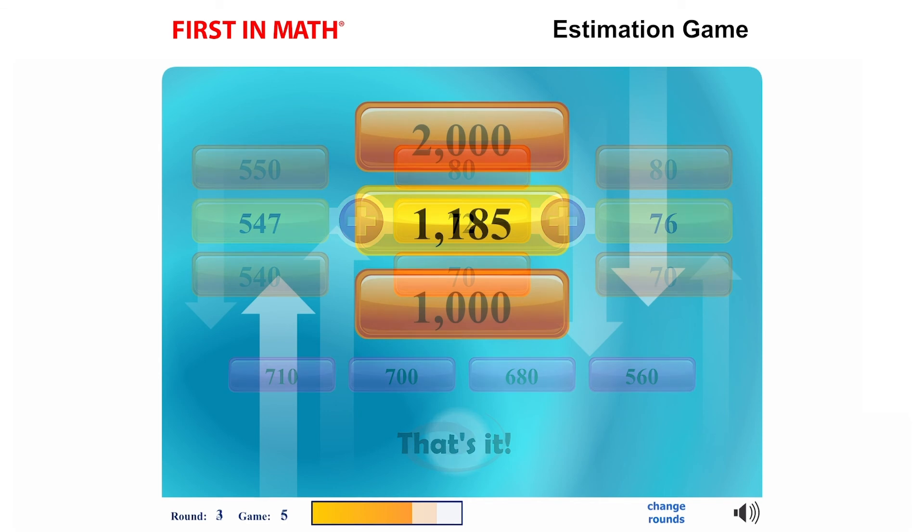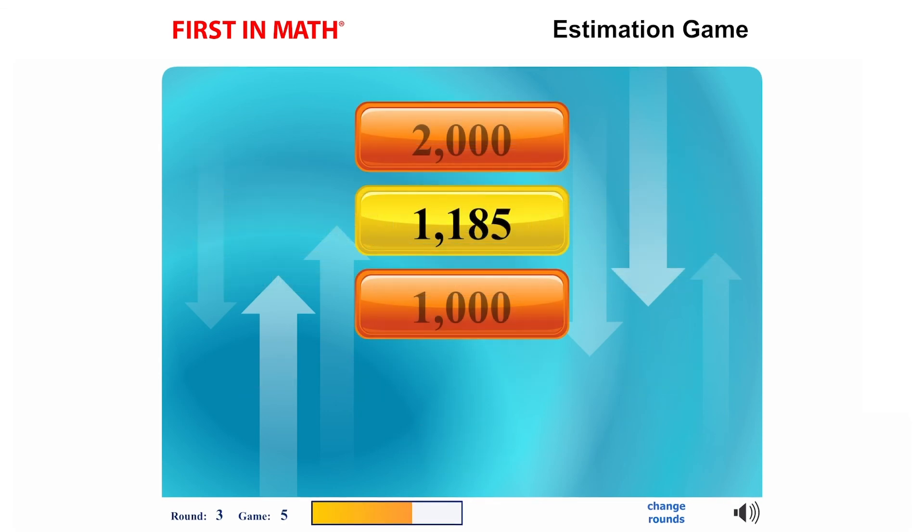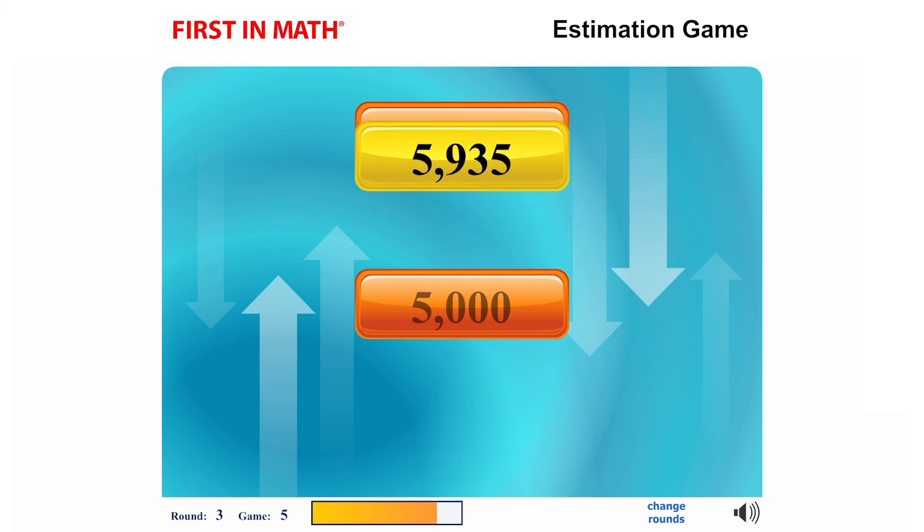Each correct answer will increase the progress meter by one mark. If you happen to select an incorrect answer, the progress meter will fall by one mark. Fill the meter up with six marks and you'll move on to the next game.